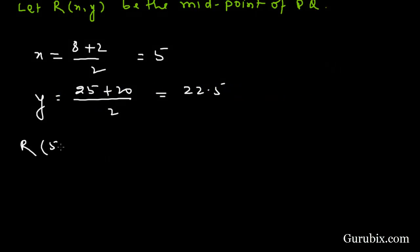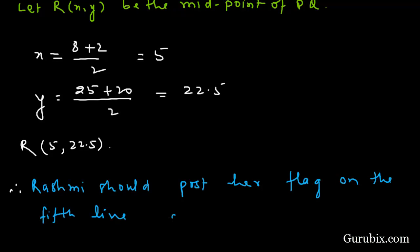Therefore, Rashmi should post her flag on the fifth line at a distance of 22.5 meters. So this is the solution of the question. Thank you.